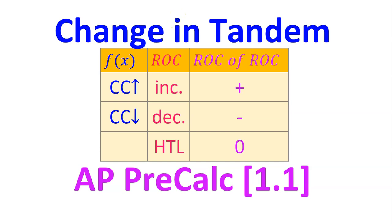This video is about change in tandem — that means how quantities change together. Among other things, we will consider the graphical relationship between an original function f, its rate of change, and the rate of change of the rate of change. This is AP Precalculus topic 1.1.